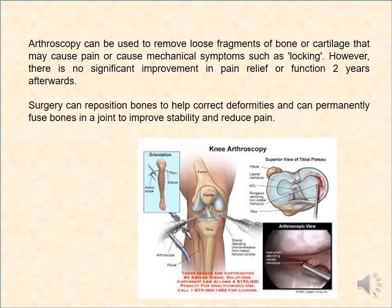Examination of the joint can also be done by arthroscopy, which can be used to remove fragments of bone or cartilage that may cause pain or mechanical symptoms such as locking. However, there is no significant improvement in pain relief or function two years after this procedure. Surgery can also reposition bone to correct deformity and can permanently fuse bone and joint to improve stability and reduce pain.